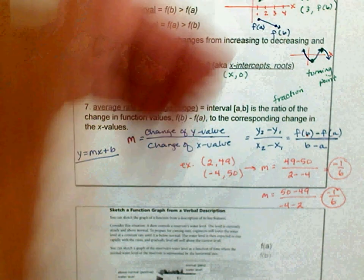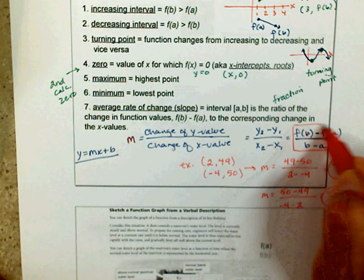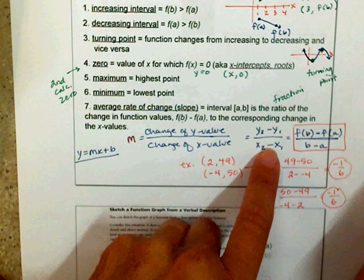An average rate of change is the same as slope. This is something you may have not seen before, right here. But it's another way to write that.